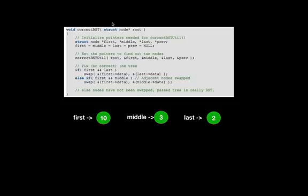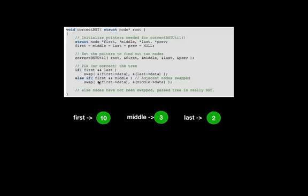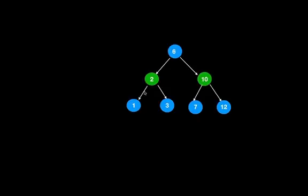This method shows the swapping logic. We calculated first, middle, and last as 10, 3, and 2. The swapping logic is: if first and last both exist, swap the data of first and last. If last is null, swap first and middle instead. In our example, first, middle, and last were all found, so we swap first and last, and the resulting binary search tree is the required correct result.